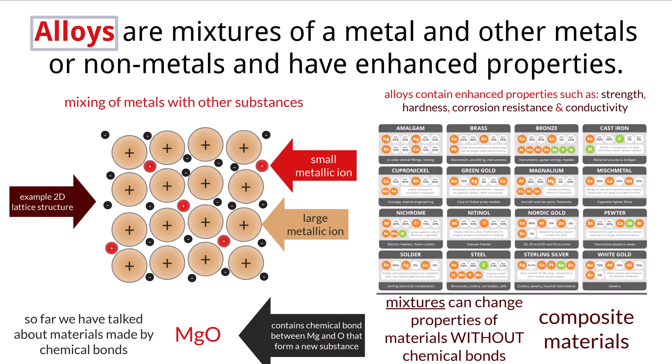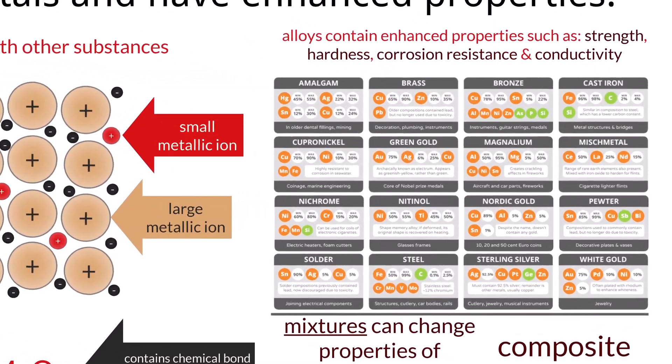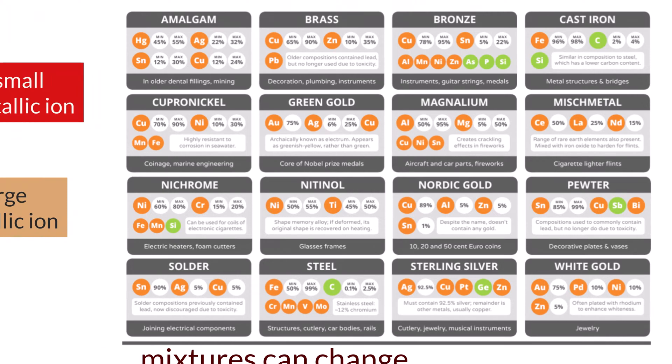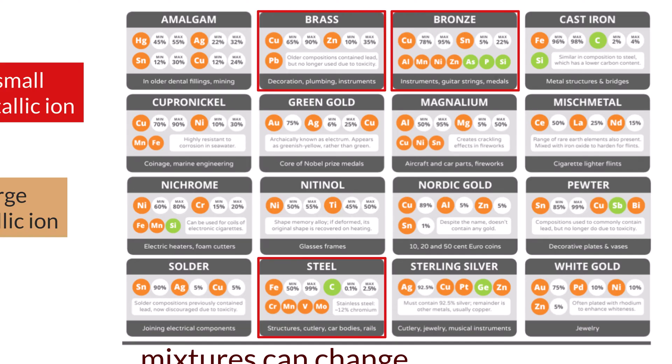These materials find extensive applications in various industries, including aerospace, automotive, construction, and electronics, where specific performance requirements need to be met. Examples of common alloys include stainless steel, a combination of iron, chromium, and nickel; bronze, which is just copper and tin; and brass, which is a combination of copper and zinc.